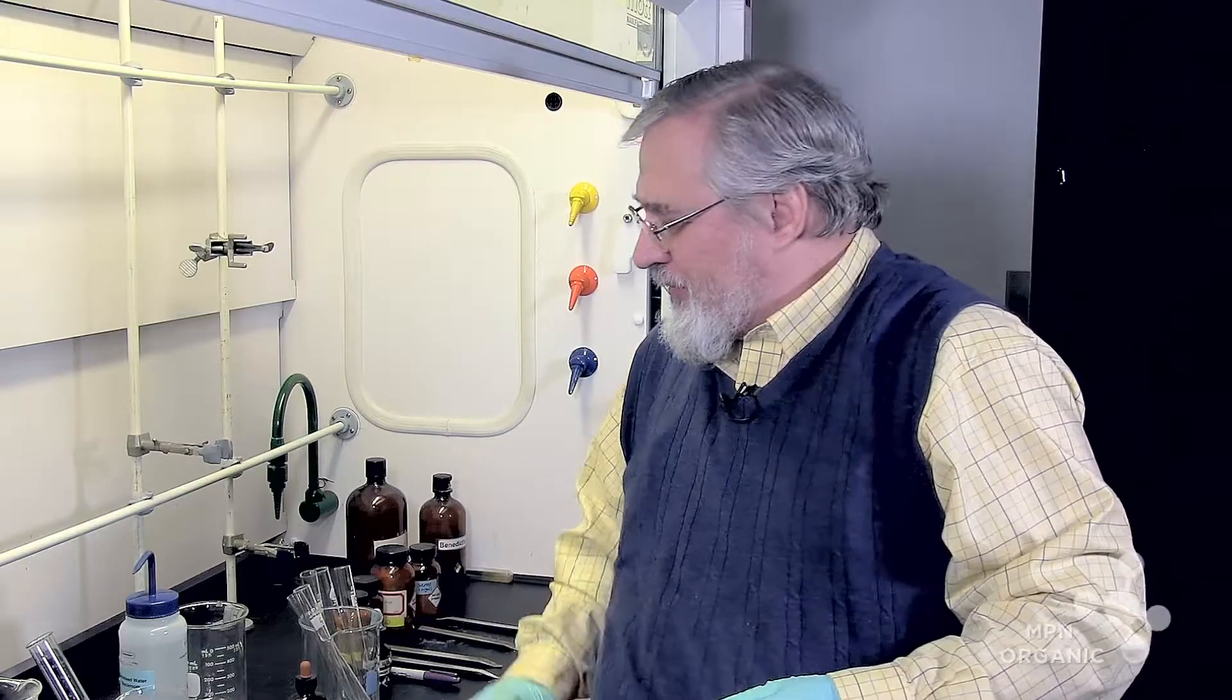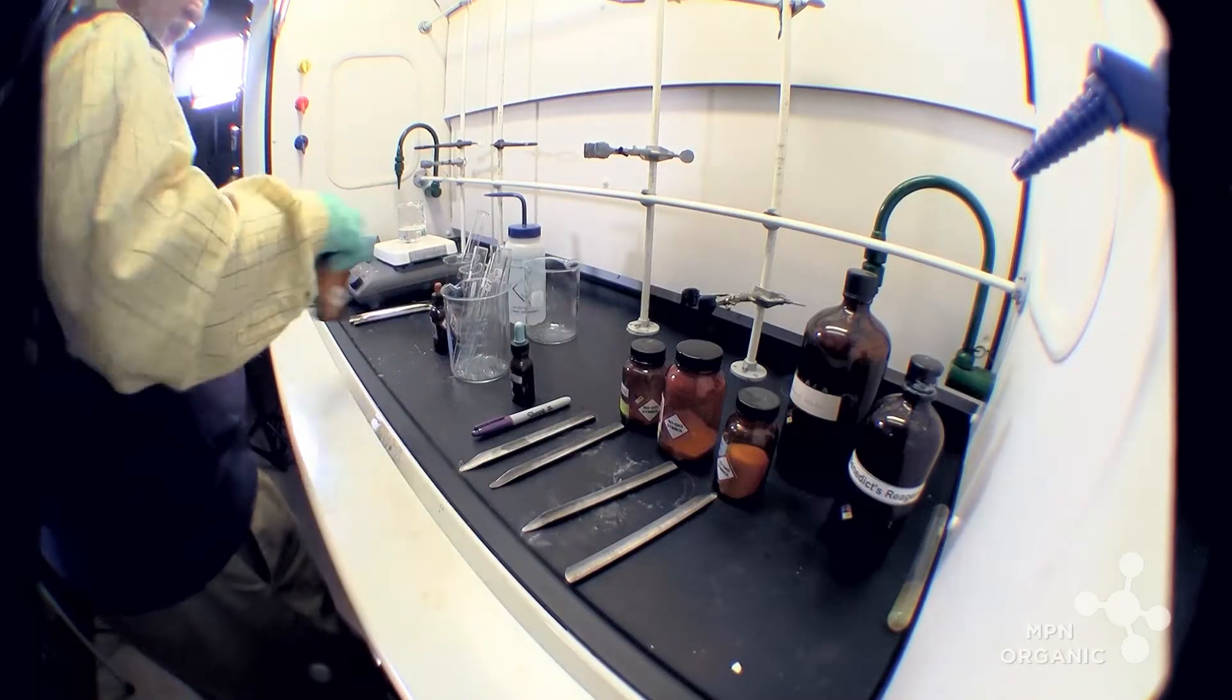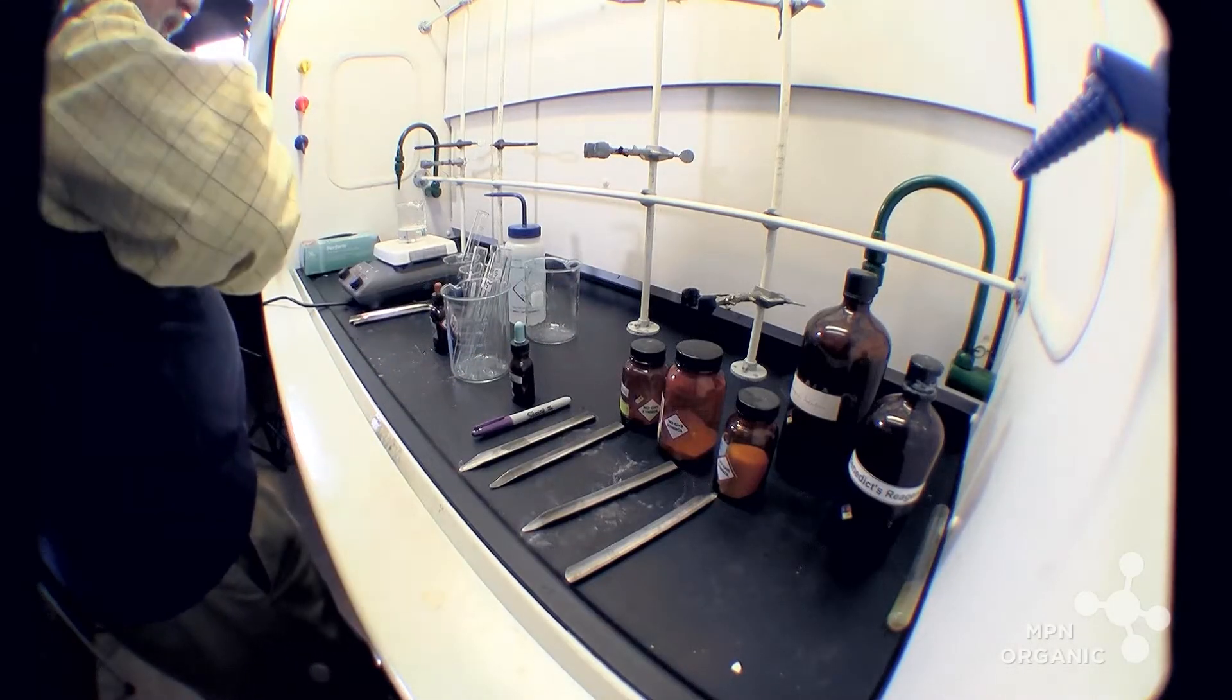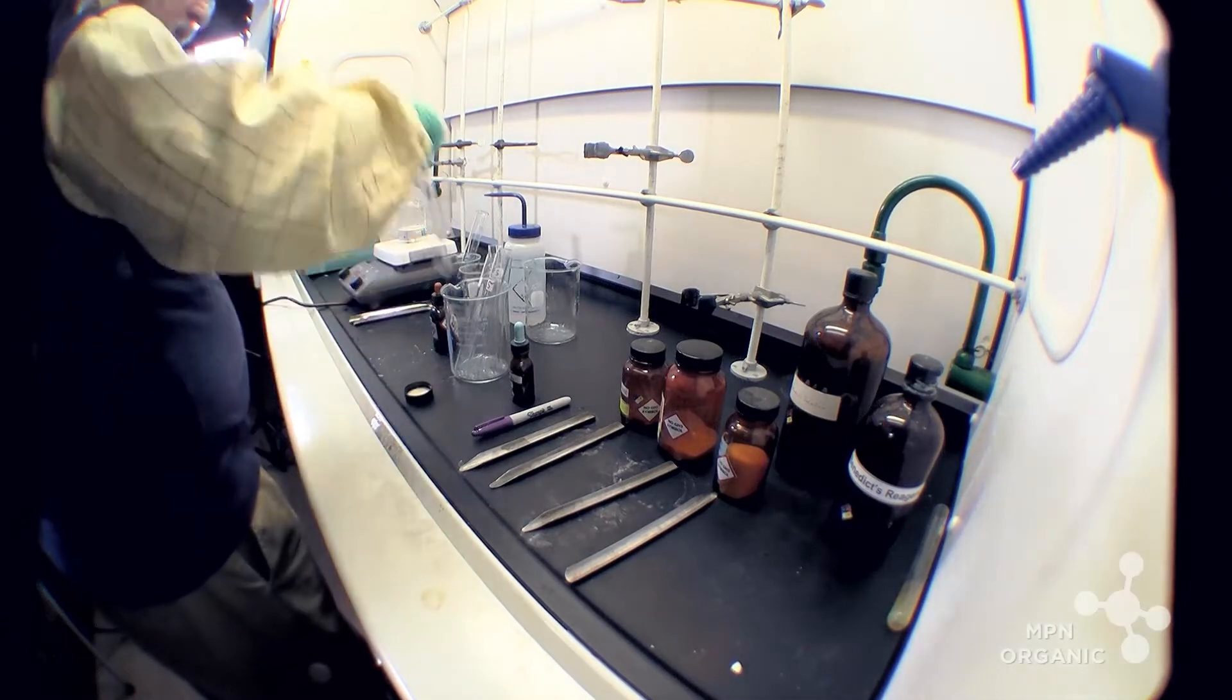We're going to be looking at this property of saccharides and disaccharides which we call reducing sugars. It's due to a structural feature within the saccharide itself which allows the title to be used - reducing or non-reducing sugar. I've got several sugars here that I took off the shelf of the chem department.